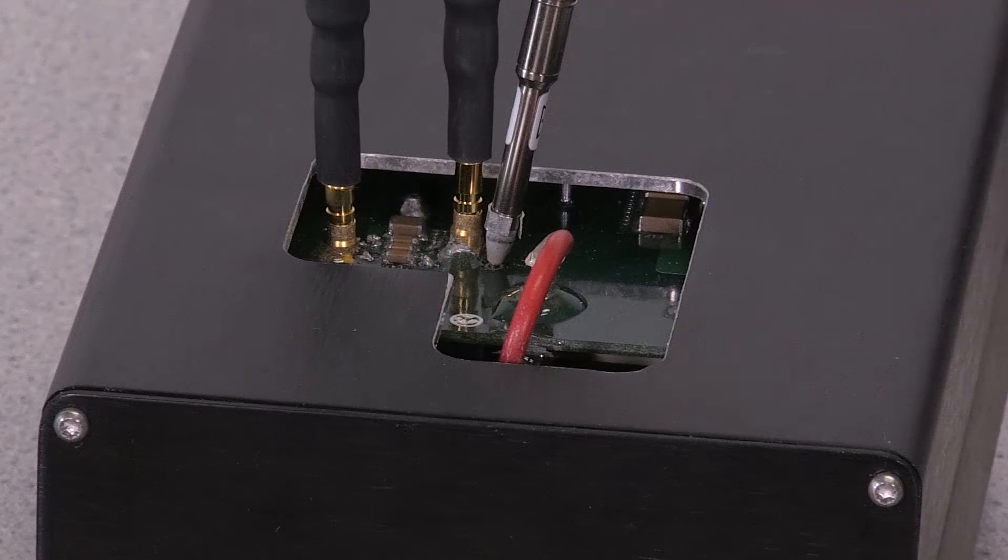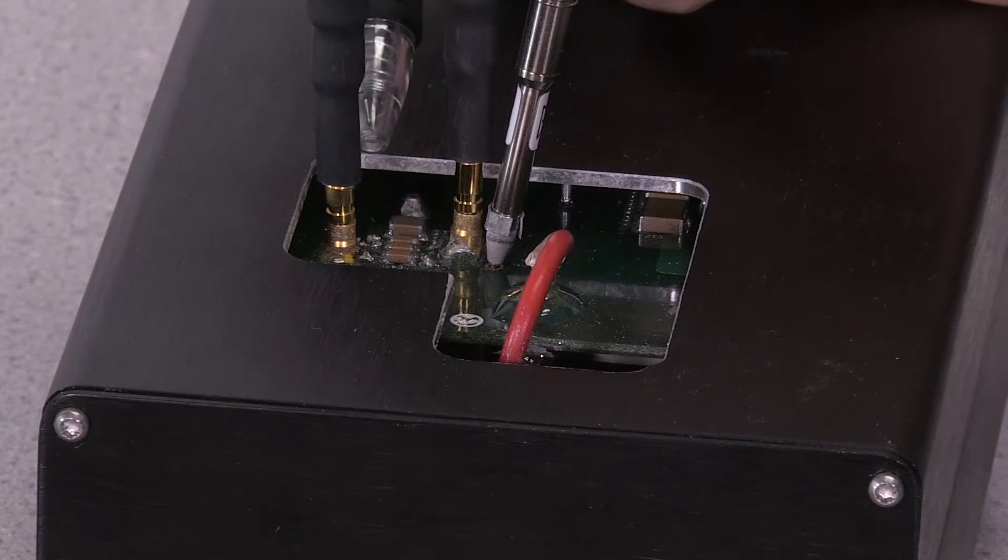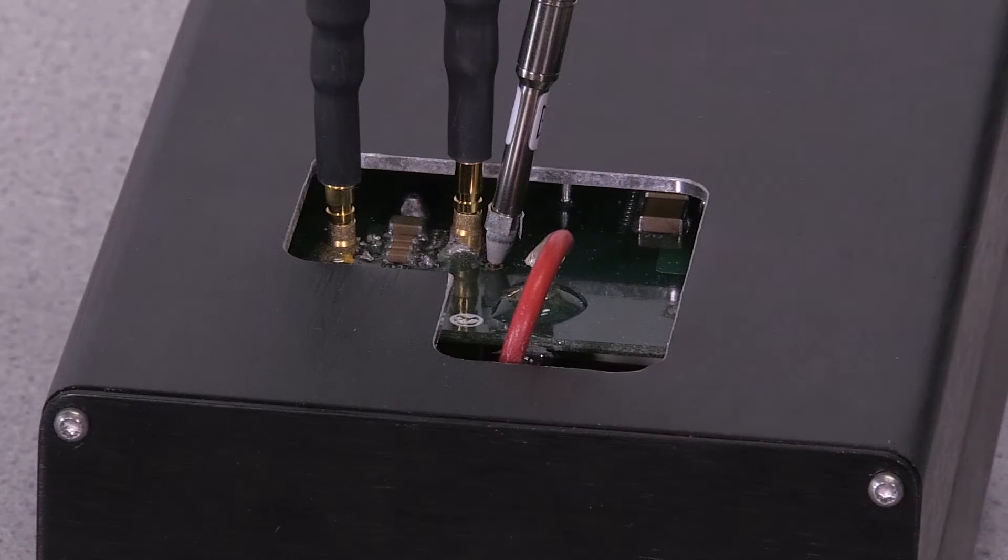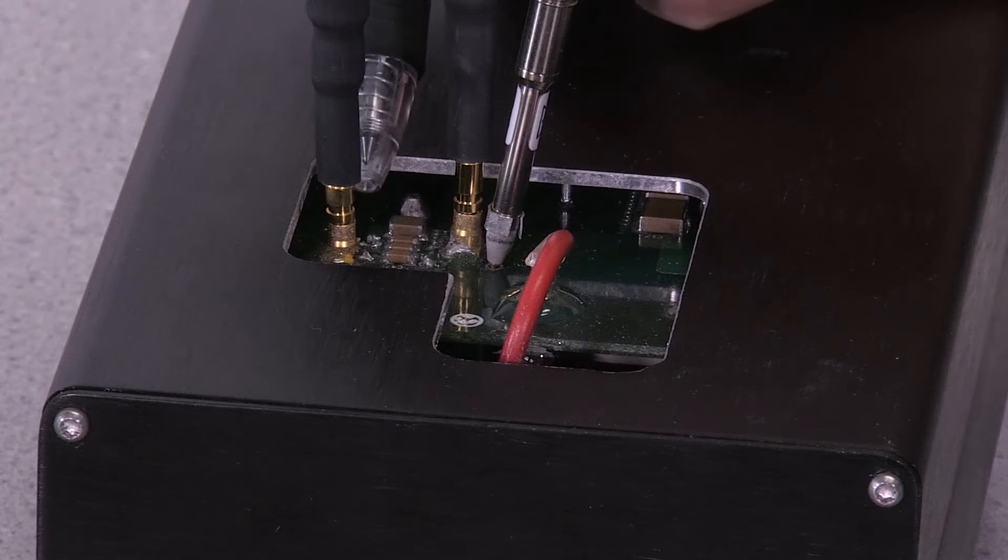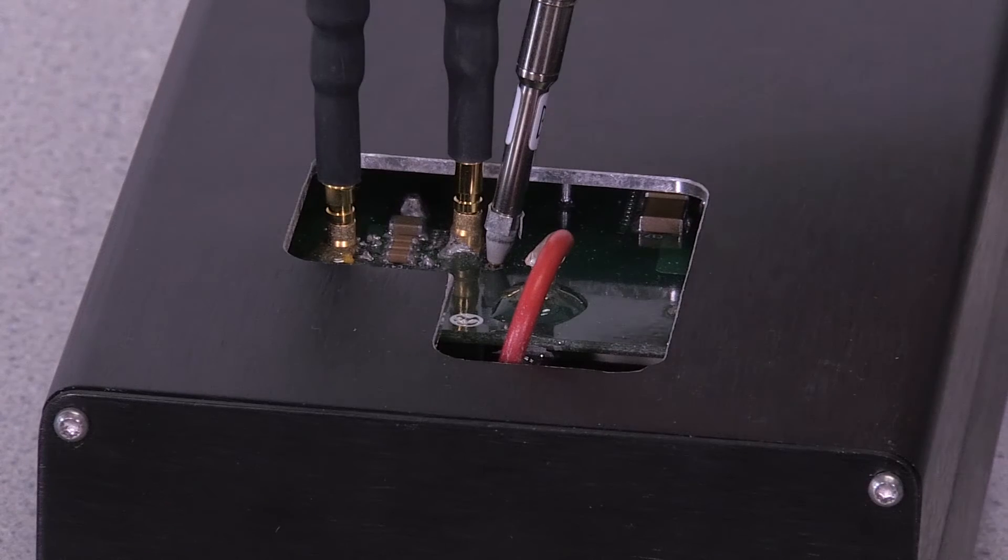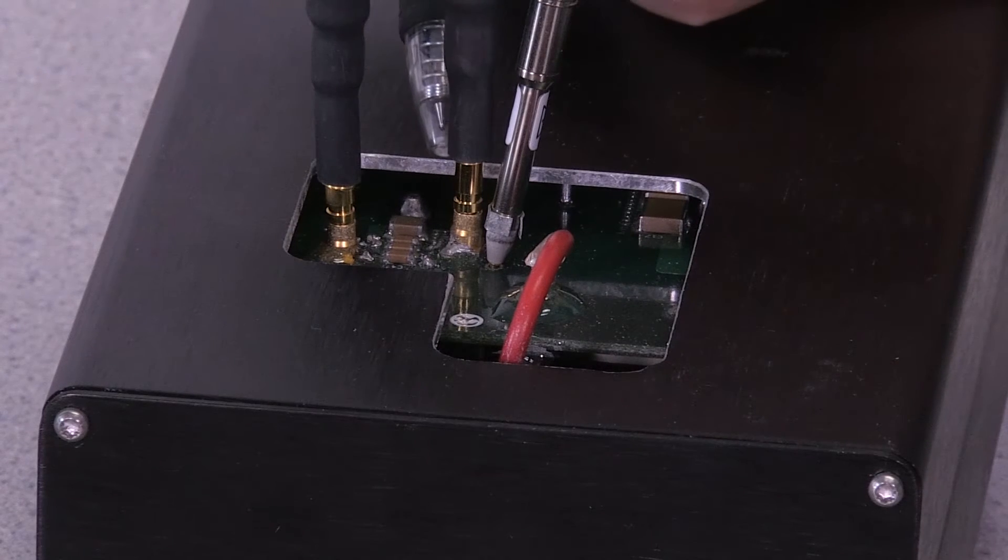So here's the reference design that we're looking at. We have a test point that we've added to the board for our Tektronix ISOVUE measurement system. This one is connected to the high-side gate-source node. We have another one connected to the low-side gate-source.